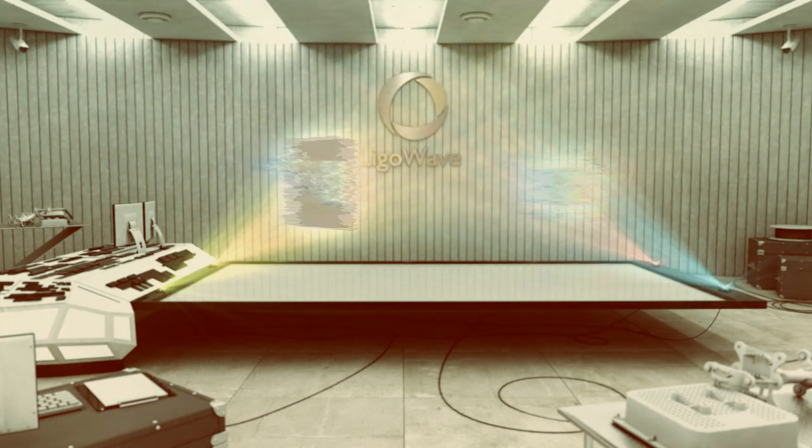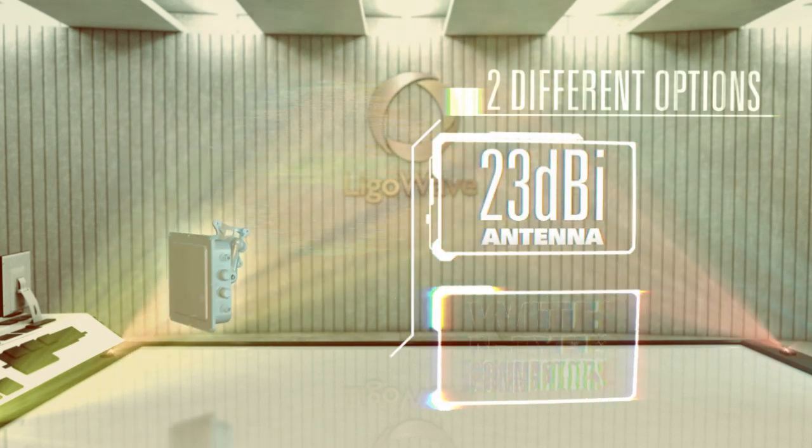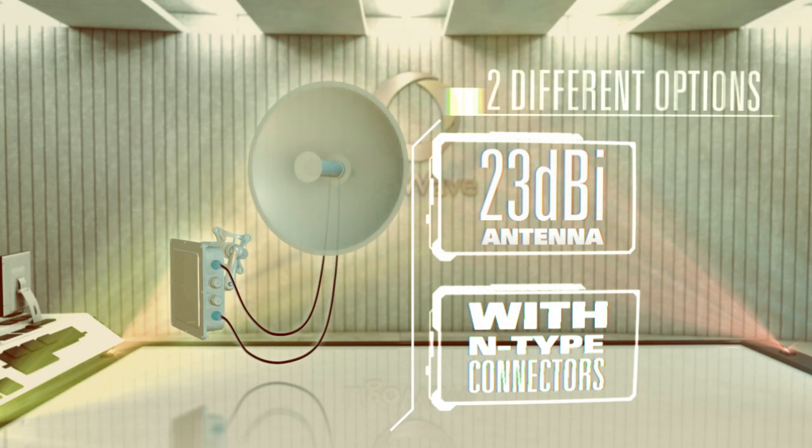Lego PTP Unity equipment is available in two different options, with an integrated dual polarized 23 DBI antenna and with external end connectors for your own MIMO antenna.